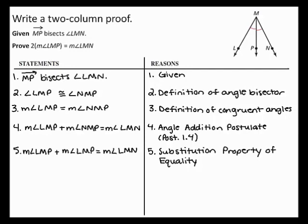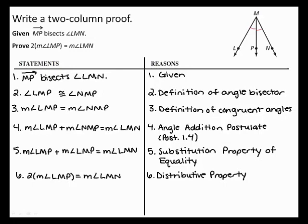Finally, you can use the distributive property to rewrite the left hand side of the equation as 2 times the measure of angle LMP. This shows that 2 times the measure of angle LMP equals the measure of angle LMN, completing the two-column proof.